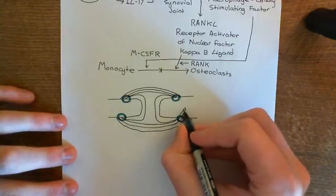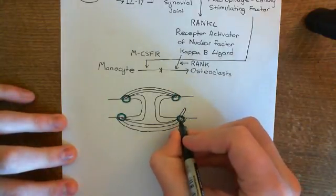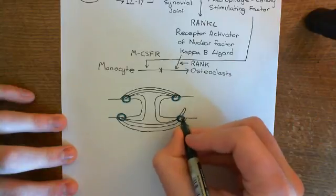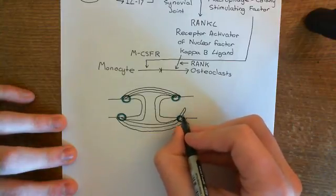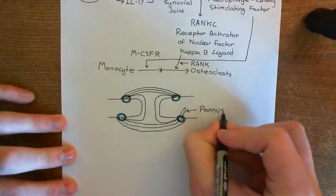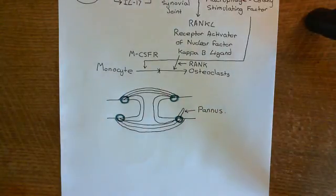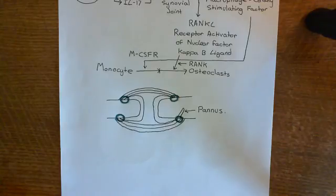Following bone resorption, you get loads of inflammatory tissue filling in the gaps, because the synovitis is still continuing. This inflammatory tissue that infiltrates into the bone is what's known as pannus. So with chronic rheumatoid arthritis, you gradually resorb bone, get cracks into the bone, and they fill with inflammatory tissue called pannus. That completes our discussion of the pathogenesis of rheumatoid arthritis, and in the next video we'll turn our attention to drug treatments.